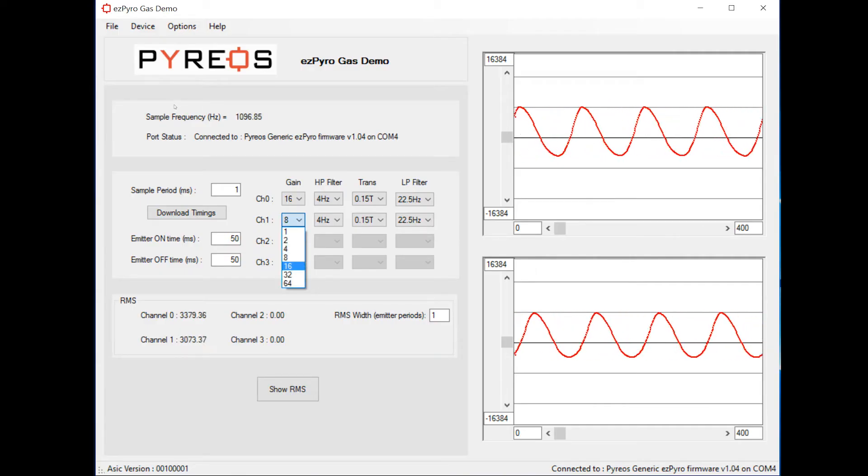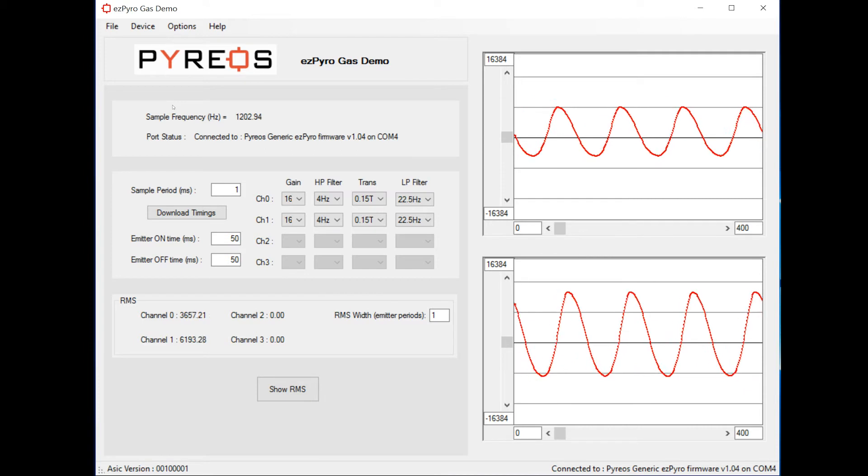By looking at the peak-to-peak signal strength, we can change the gain settings internally of the EZ Pyro sensors and show the effect that has on the signal output. Signal gain, which the sensor is configured to, can be used to adjust the sensor to the system in which it is being used.